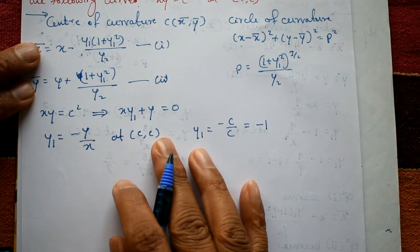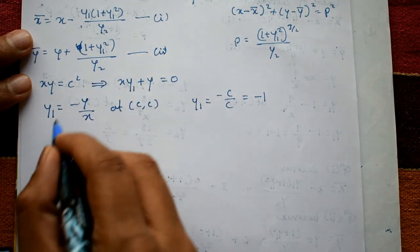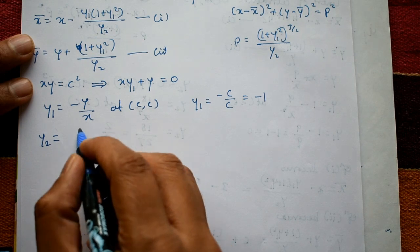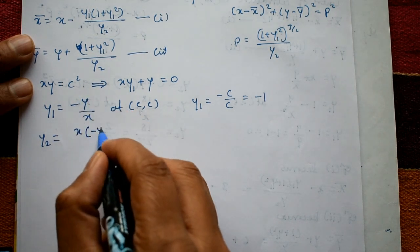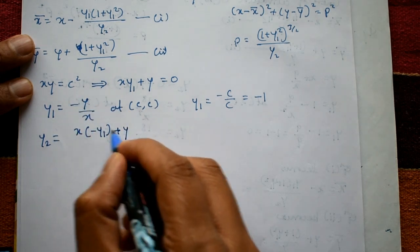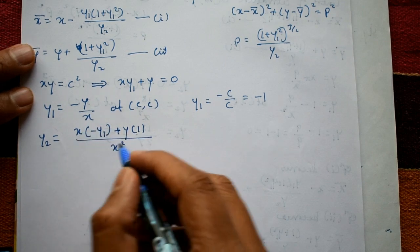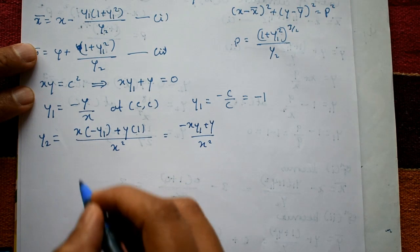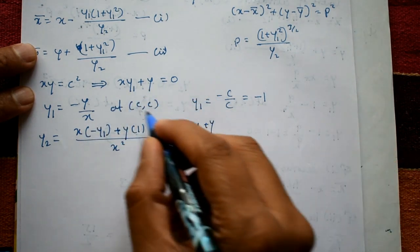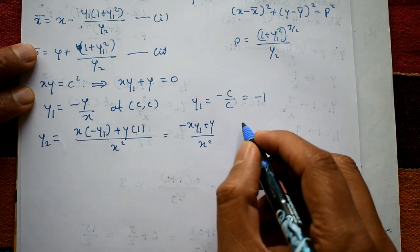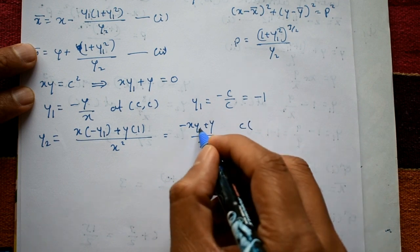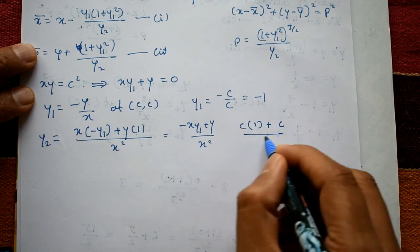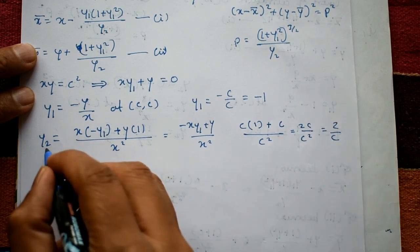Next we need y2. Differentiate y1 = −y/x using the quotient rule: y2 = (−x·y1 + y) / x². At point (c, c), substituting x = c, y = c, y1 = −1: y2 = (−c·(−1) + c) / c² = (c + c) / c² = 2c / c² = 2/c. So y2 = 2/c.